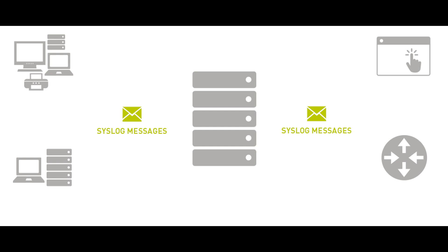Log messages include things like timestamp, severity rating, device ID including IP address, and information that defines an event. A syslog message header has a priority level, which is a combination of a code for the process of the device creating the message and the severity level. Severity levels usually range from zero for emergencies to seven for debug messages.